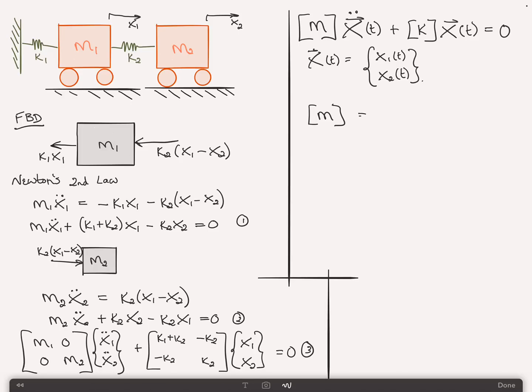By inspection we can see that M is equal to M1, 0, 0, M2. Similarly, the K matrix is K1 plus K2, minus K2, minus K2, K2.